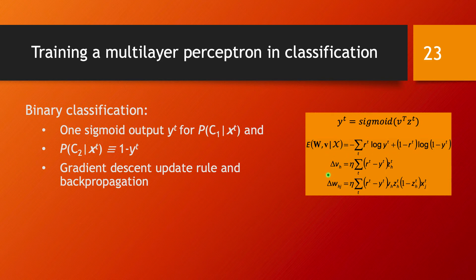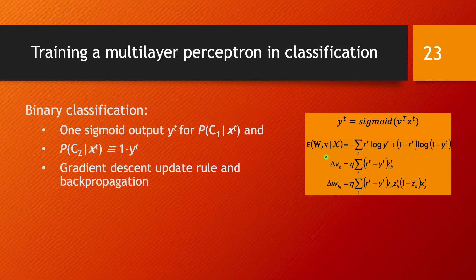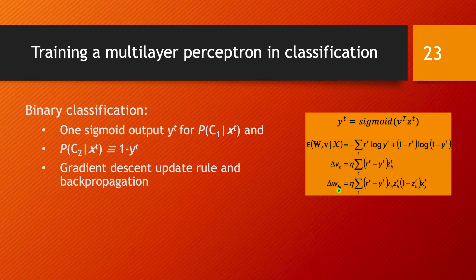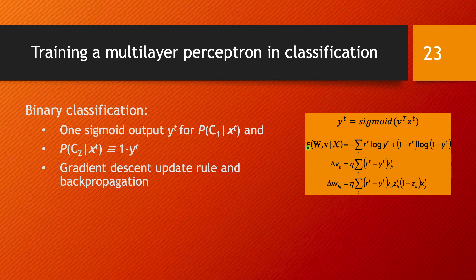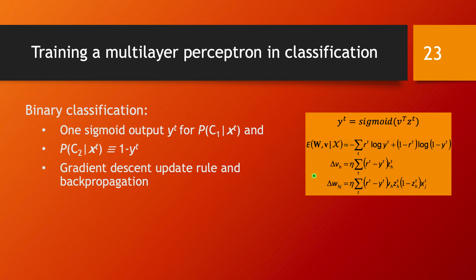Then we calculate the partial derivatives of this error function with respect to V and then later with respect to W. This is the same thing we've seen before for any classification problem we've had, the same idea of backpropagation with gradient descent.